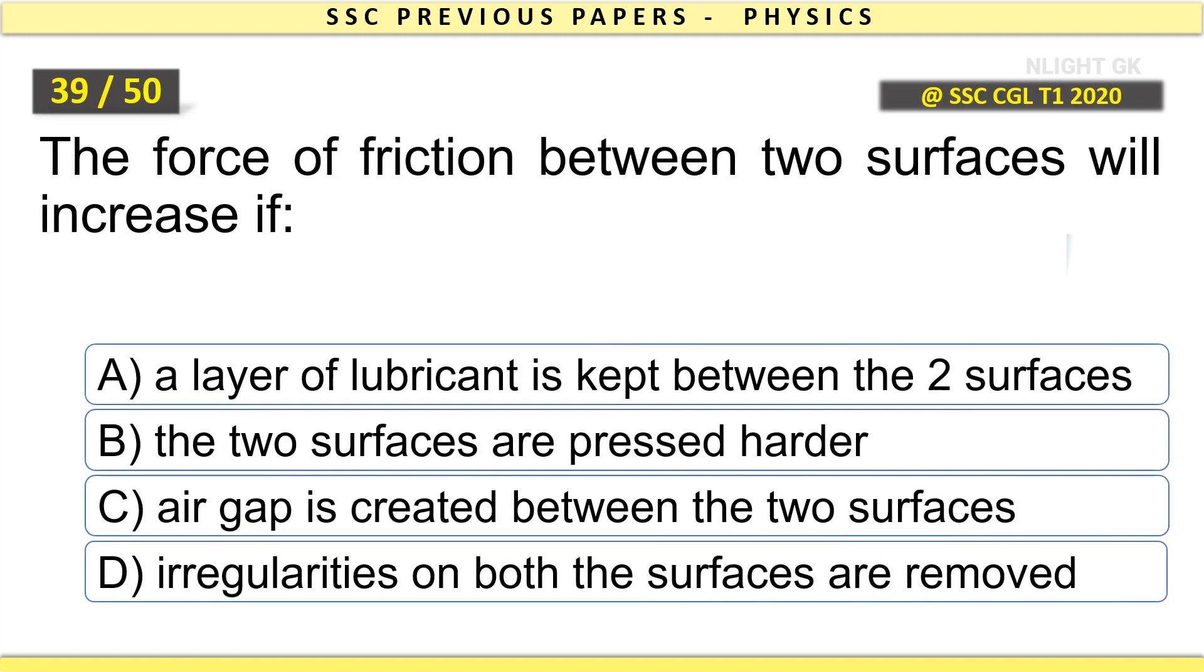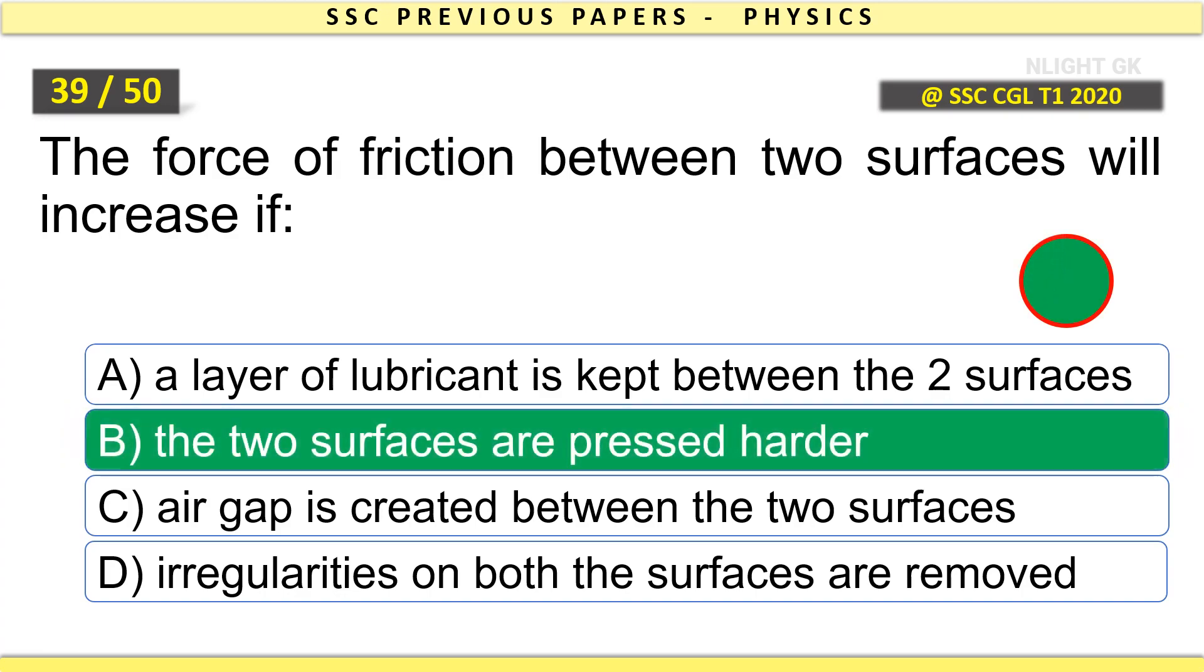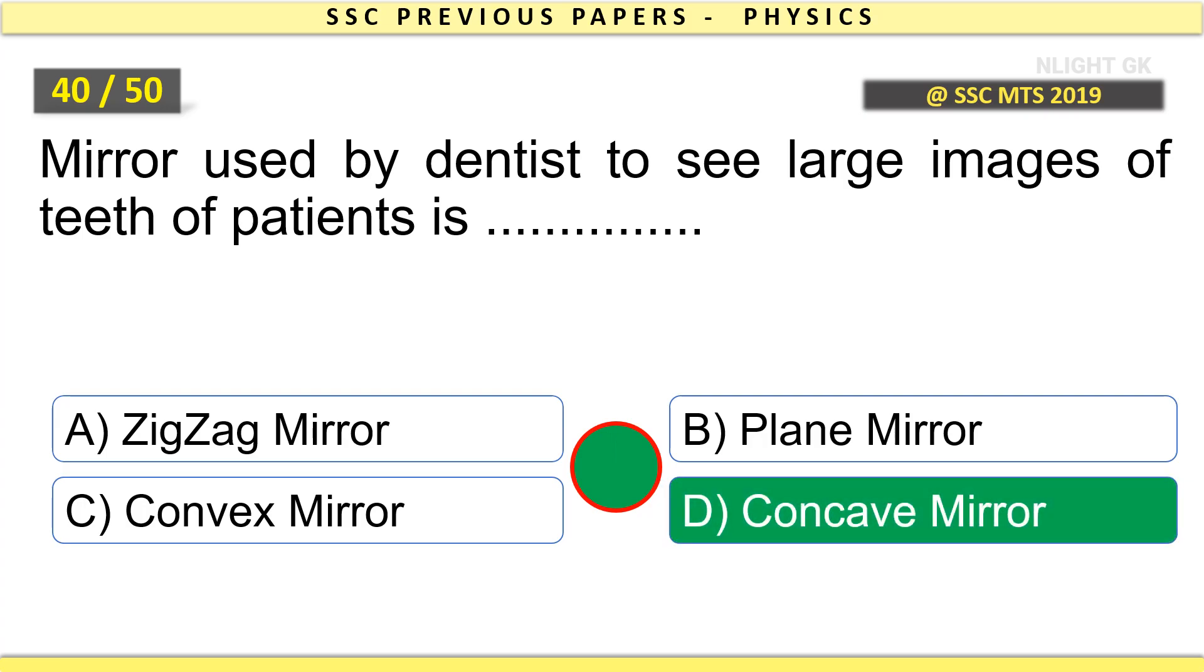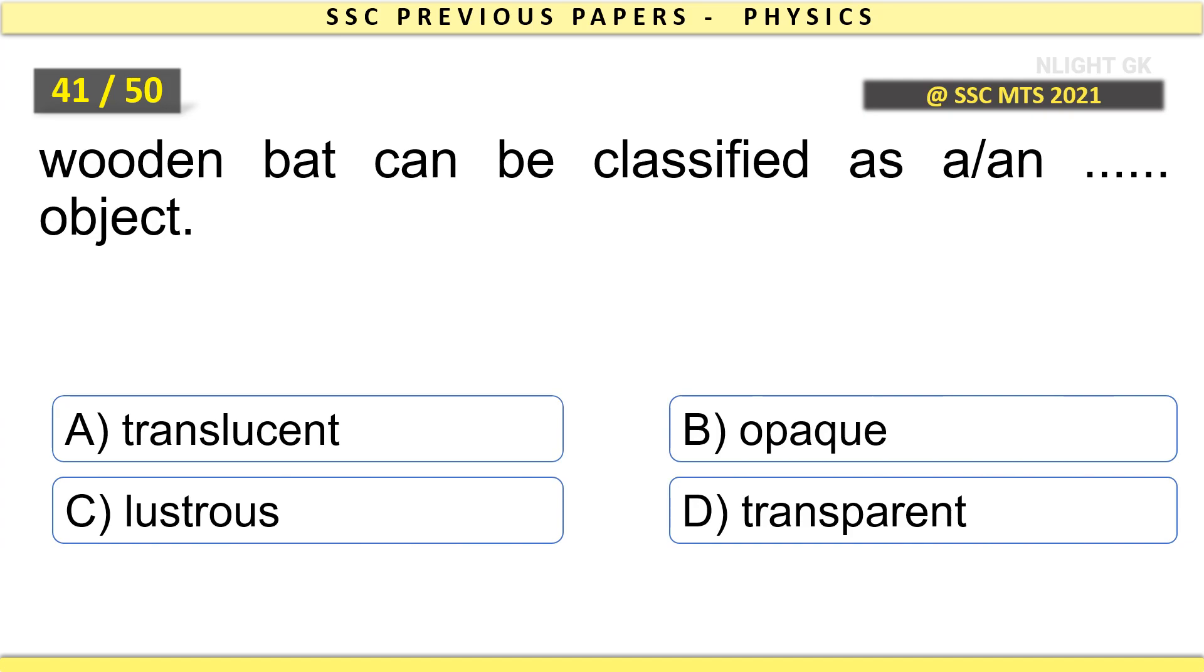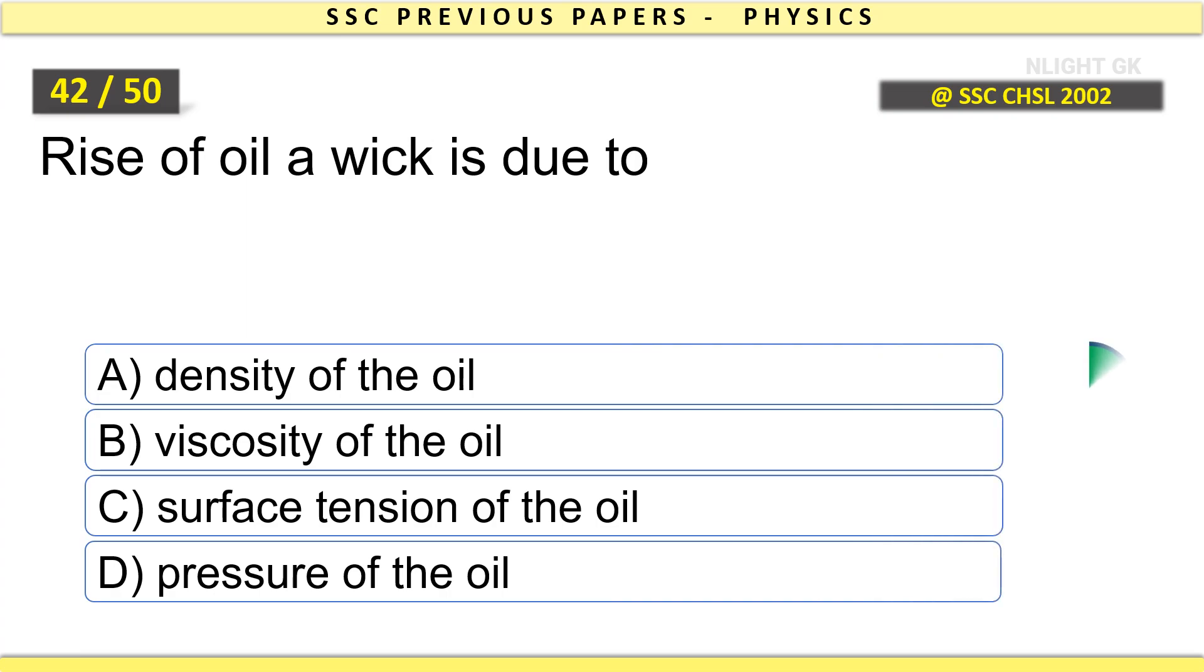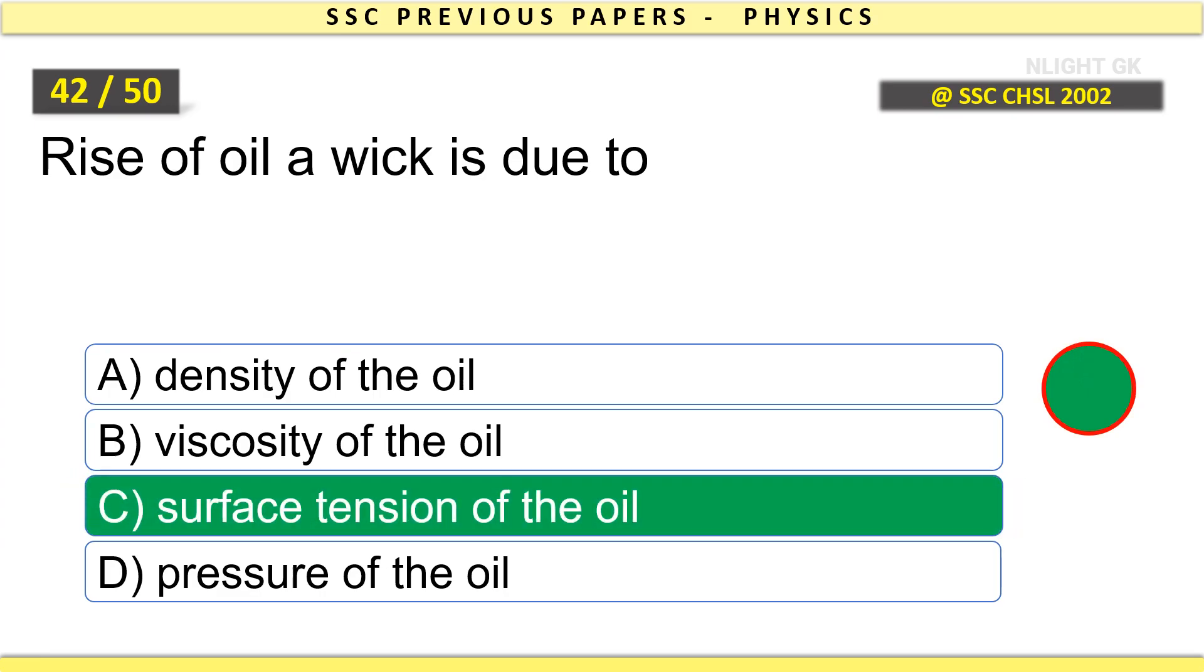What is the SI unit of momentum? Kilogram meter per second. Which electromagnetic radiation is used for satellite communication? Microwave. The force of friction between two surfaces will increase if the two surfaces are pressed harder. Mirror used by dentist to see large images of teeth of patients is concave mirror.